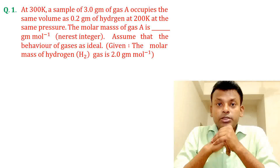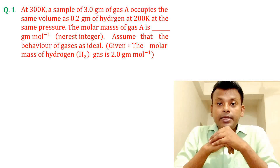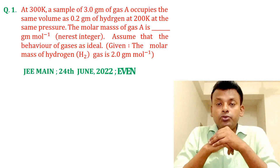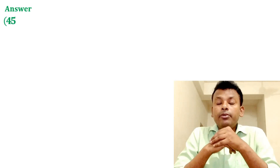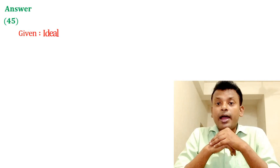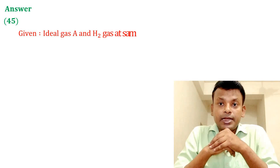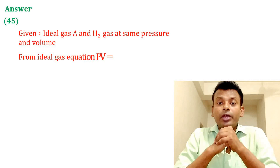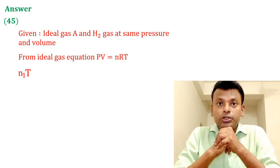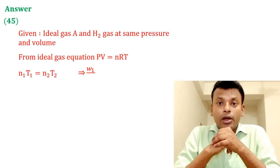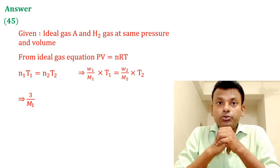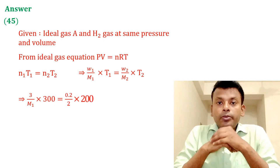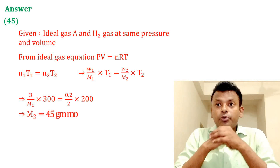This question was set in JEMN 24th June 2022 evening set. Answer is 45. Given ideal gas A and hydrogen gas at same temperature and pressure, from the ideal gas equation PV = nRT, so N₁T₁ equals N₂T₂. And N₁ = (W₁/M₁)T₁ = (W₂/M₂)T₂. Solving, M₁ equals 45 grams per mole.